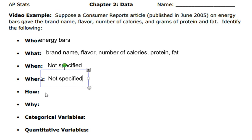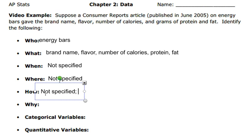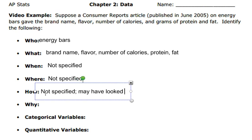The how — a lot of times they won't tell you about the how, so we're going to say not specified. But we are going to give an educated guess of how they could have done it. So they may have looked at the labels.